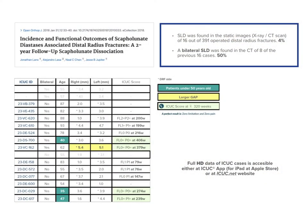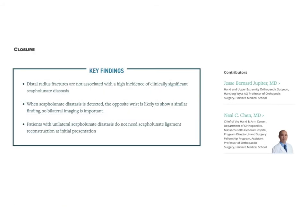We followed this up at our own center, looking at a two-year follow-up of fractures with articular involvement of the distal radius and wide scapholunate interval. Using CT scan, we found disruption of the dorsal intercarpal ligament and problems in the carpus, but not true scapholunate ligament disruption. Our findings provide very little suggestion that these are true scapholunate ligament injuries, and bilateral imaging is very important before initiating surgery.